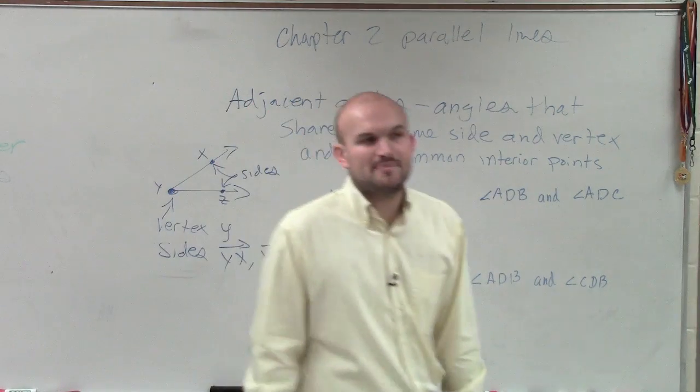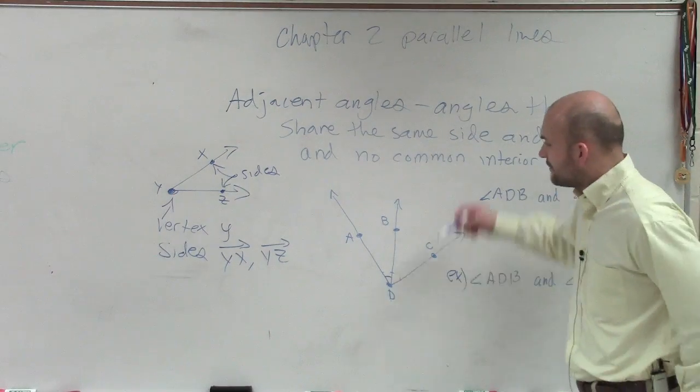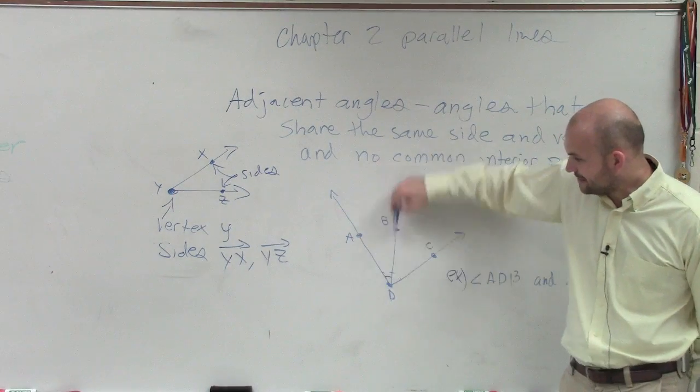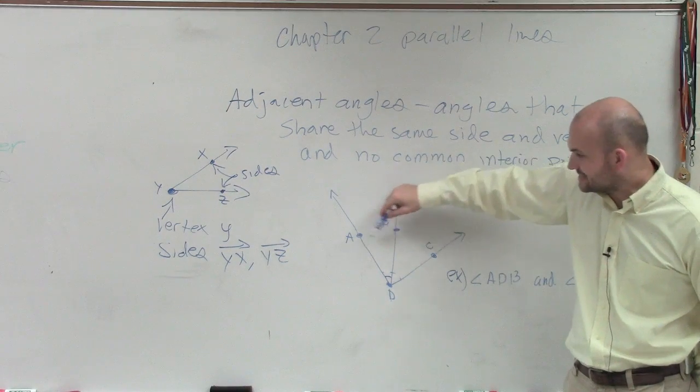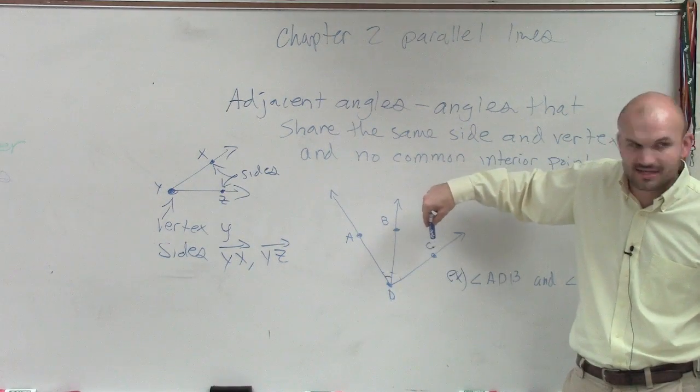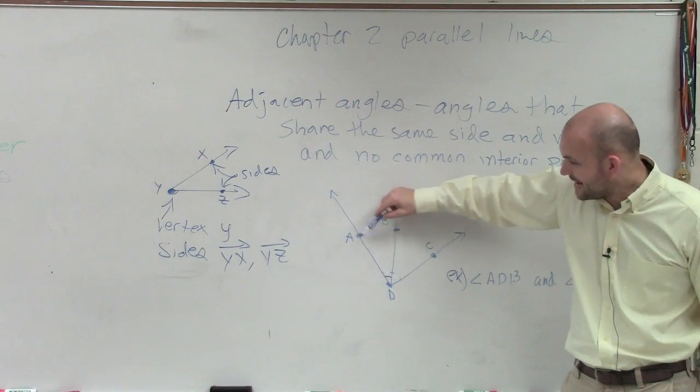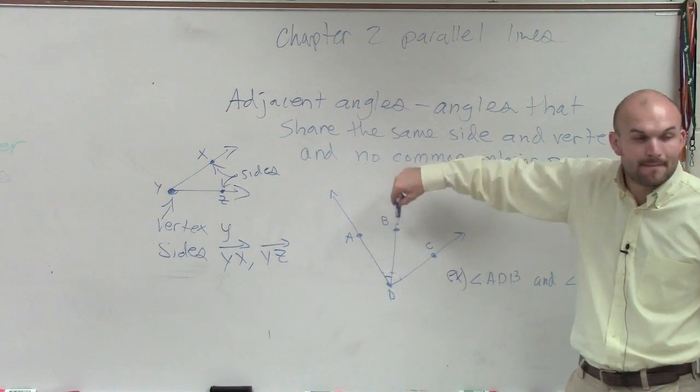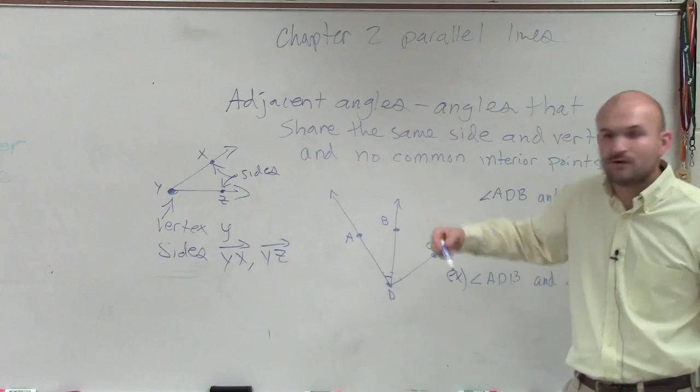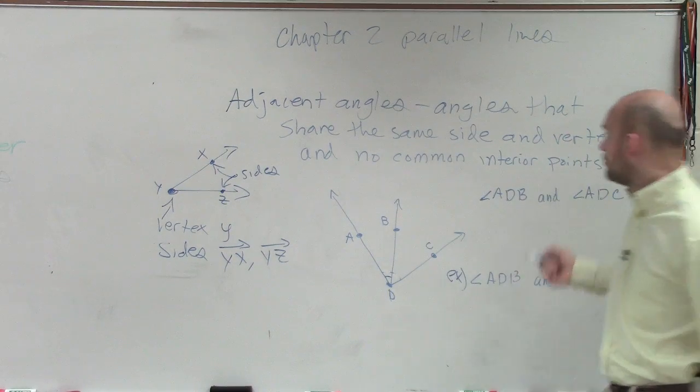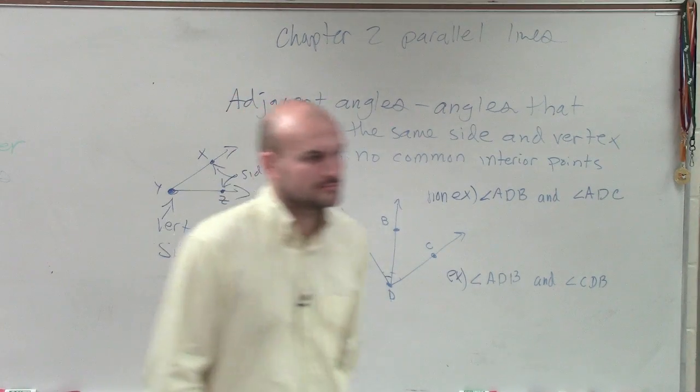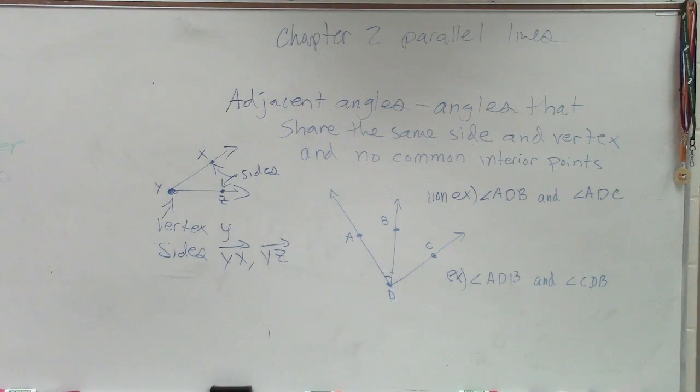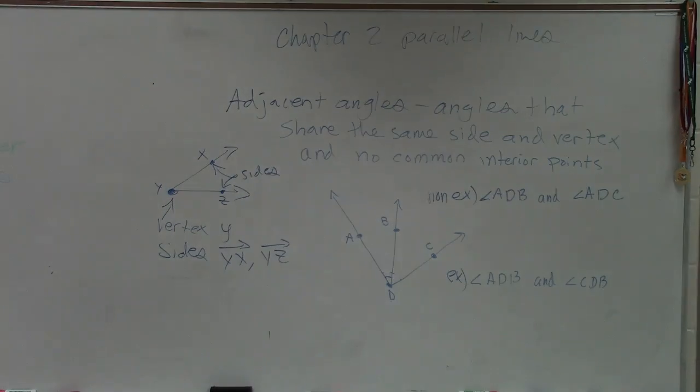So let me talk about why B is inside our other angle. If I'm looking at this, I have ADB and then ADC. Do you see how the point B is inside the point ADC? Does everybody see this? This is very important for everybody to look at. ADC, point B is inside of it. Therefore, they share a common interior point. So this is what we call a non-example.